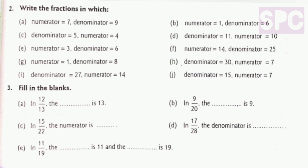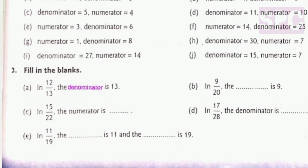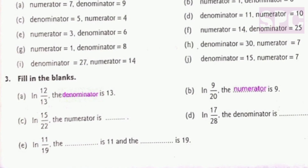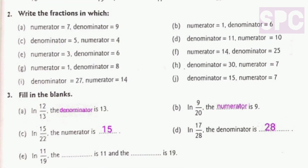Let's move on to question number 3: Fill in the blanks. Now children, in this question you can see there are in total 5 parts and in each part a fraction is being provided and we have to fill in the blanks. Let's start with part A. In 12 by 13, the blank is 13. Now you can see 13 is written below 12, so it means 13 is the denominator — here we will write denominator in the given blank. Part B, in 9 by 20, the blank is 9. So what is 9? 9 is the numerator, so we will write numerator in the given blank. Part C, in 15 by 22, the numerator is blank — we can clearly see that the numerator is 15, so we will write 15 in the given blank.